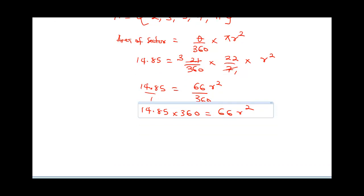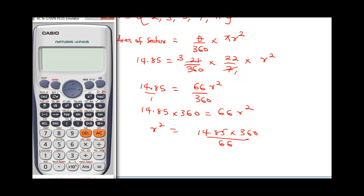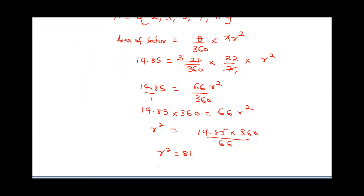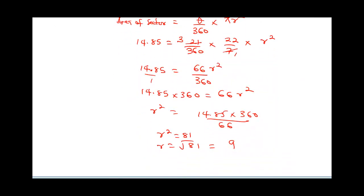r squared is going to be 14.85 times 360 divided by 66. Let's bring in our calculator. Our r squared is equal to 81. Therefore, our r is going to be square root of 81, and that's going to give us 9. Our radius is going to be 9 cm. That's the final answer.